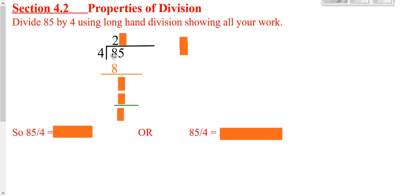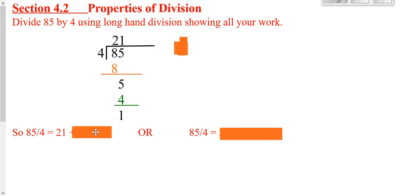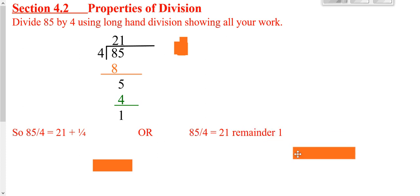Then you'd take 8 minus the orange 8 to get 0, bring down the next term, and repeat. 4 times what gives you 5? It goes in there once. 1 times 4 is 4, then you subtract and get 1. So 85 divided by 4 is either 21 plus 1 divided by 4 — which is your remainder over your divisor — or 21 remainder 1.